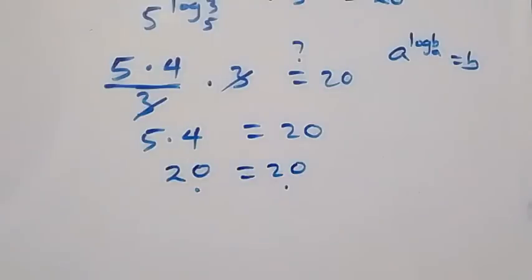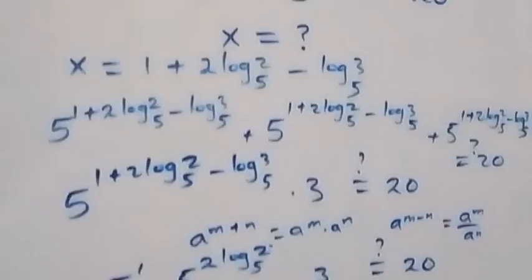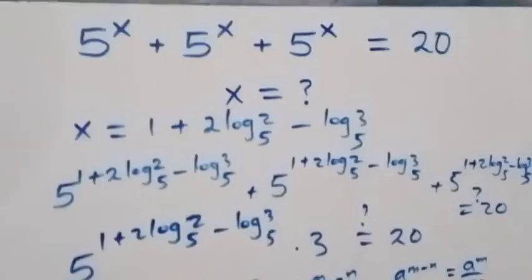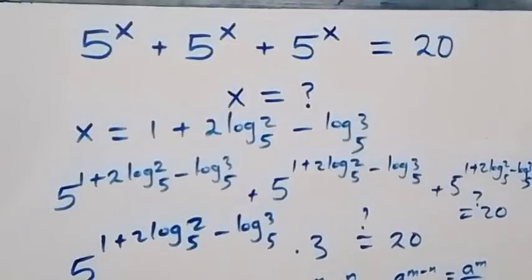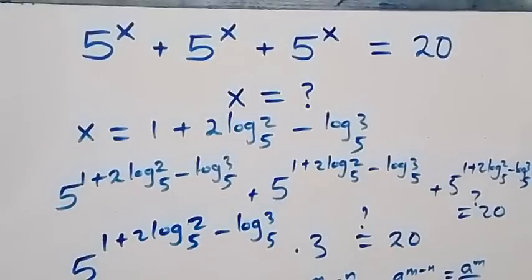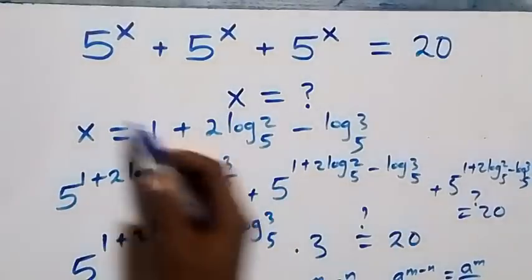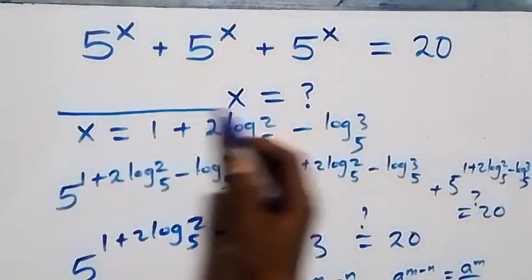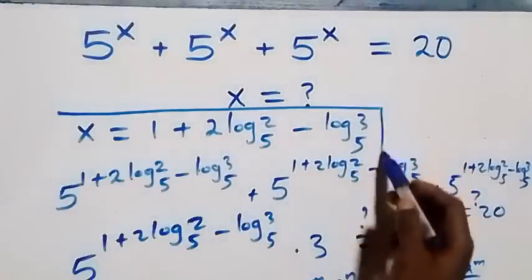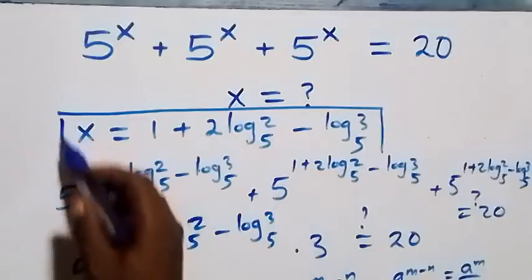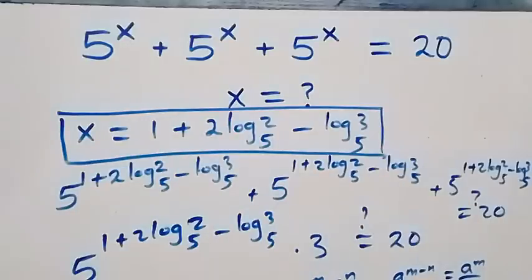The left hand side equals the right hand side, and hence we conclude that x equals to 1 plus 2 log 2 base 5 minus log 3 base 5 satisfies this given problem.